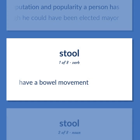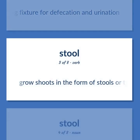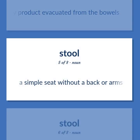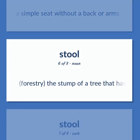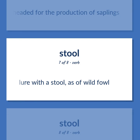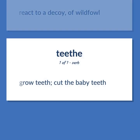Stool: Have a bowel movement. A plumbing fixture for defecation and urination. Grow shoots in the form of stools or tillers. Solid excretory product evacuated from the bowels. A simple seat without a back or arms. Forestry: the stump of a tree that has been felled or headed for the production of saplings. Lure with a stool, as of wild fowl. React to a decoy of wild fowl. Grow teeth, cut the baby teeth.